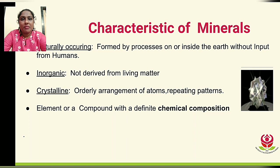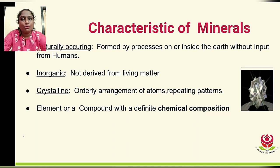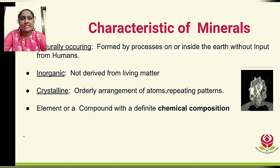The fourth characteristic is that it should be an element or a compound with a chemical combination. An element is a substance entirely made up of one type of atom. A compound is a chemical combination of two or more elements. So to summarize: minerals are naturally occurring, inorganic, crystalline, and are either an element or a compound.